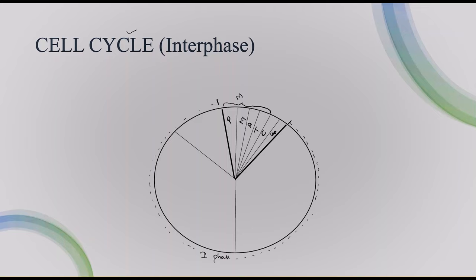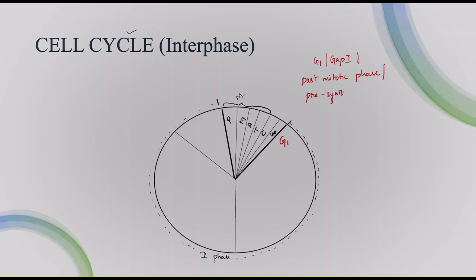Now let's come to the interphase. The first sub-phase is G1 phase. G1 phase is also called gap one, or post-mitotic phase — because it happens after the M phase — or pre-synthetic phase, because it happens before the S phase. It is also called the first growth phase.